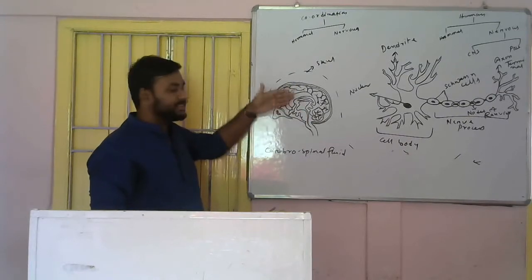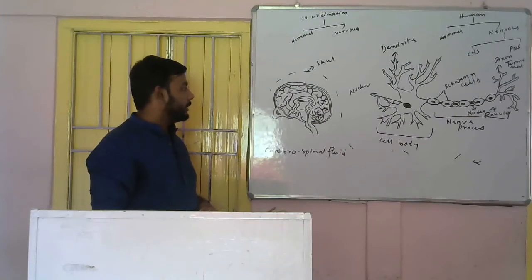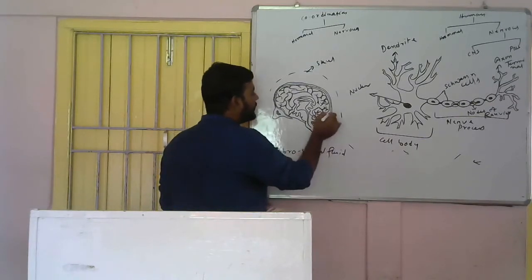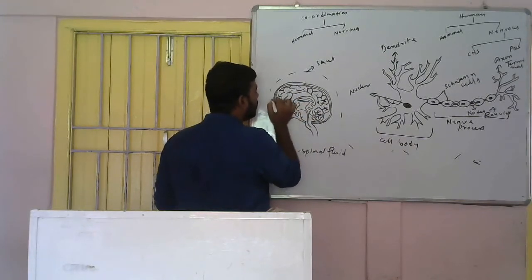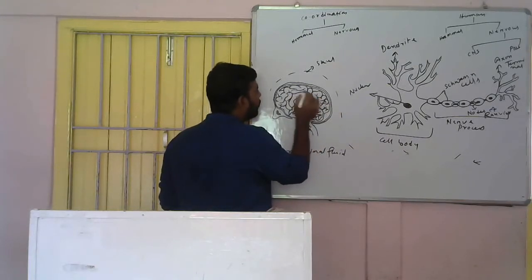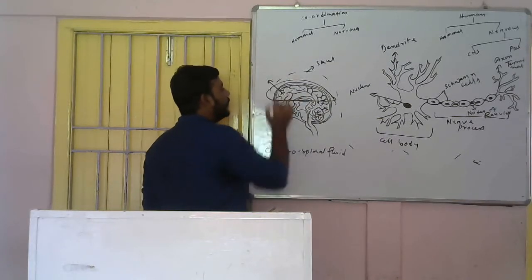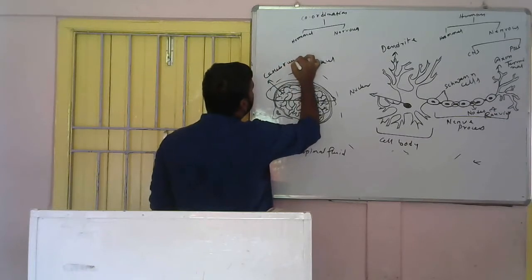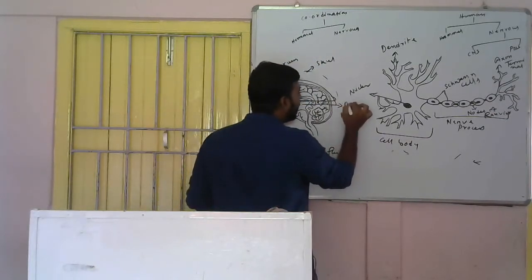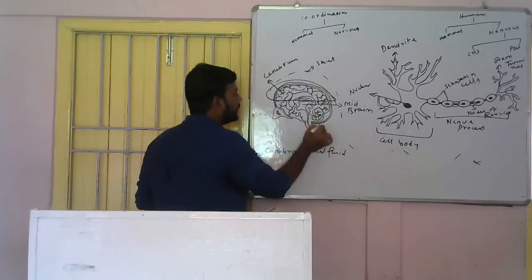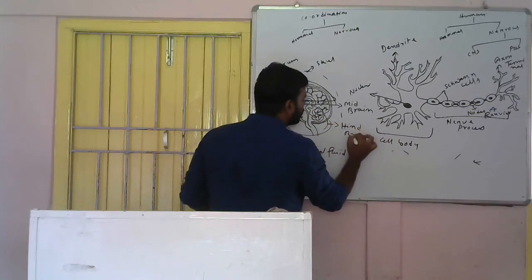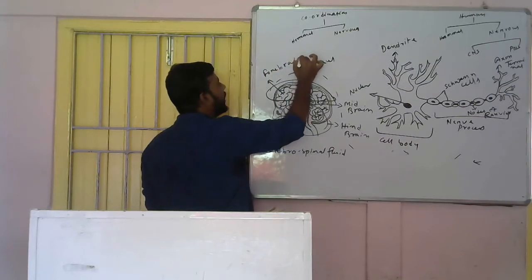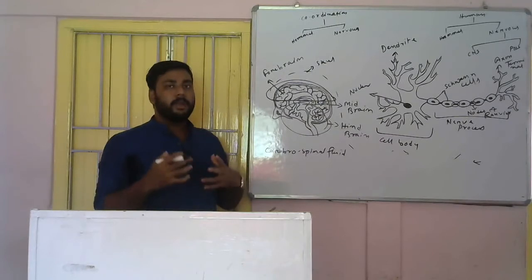If you see a lateral section of a brain — the side view — you will see the brain contains three major parts. The first part is the forebrain, which is basically the bigger portion of the brain. A major part of the forebrain is the cerebrum. The second is the midbrain, and the third is the hindbrain.